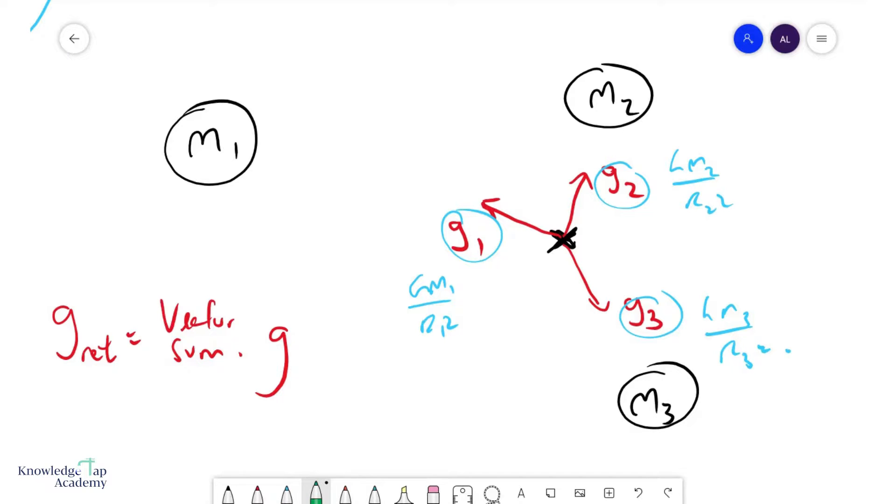If you remember how that works, you do a tip-to-tail. That will be your net. Of course, it's very difficult to do with three forces, so I would suggest when you do a vector sum for something like this, you resolve everything into their vertical and horizontal components, sum up the components, and find the net gravitational field strength.